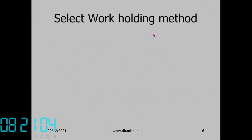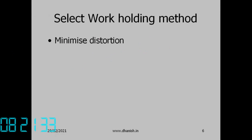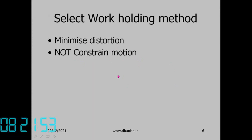Selecting the work holding method: we have to keep the workpiece on the table and hold it. We must minimize distortion — tightening nuts and bolts applies force that can bend or distort the workpiece. The holding method should also not constrain the motion of the probe and stylus, which must be able to move freely to all required positions.